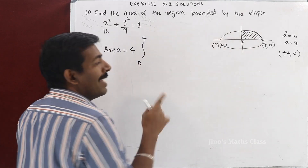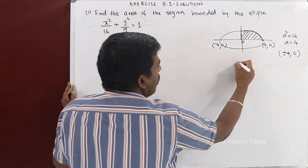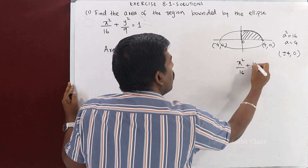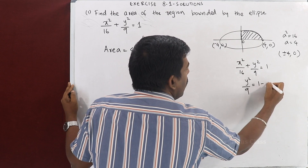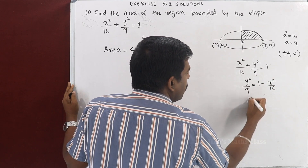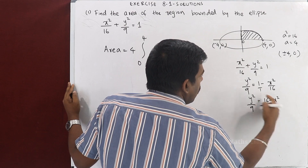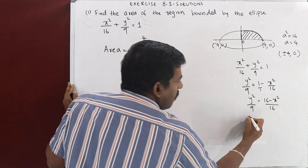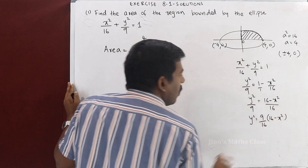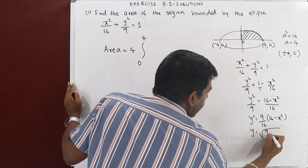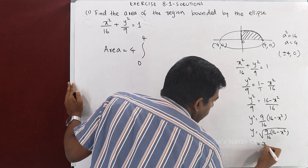We will express y in terms of x and then integrate. From x²/16 + y²/9 = 1, we get y²/9 = 1 - x²/16, so y²/9 = (16 - x²)/16. Cross-multiplying gives y² = (9/16)(16 - x²), so y = (3/4)√(16 - x²).